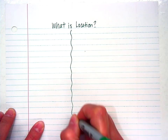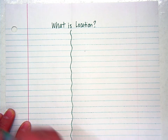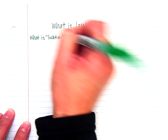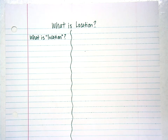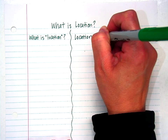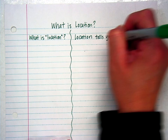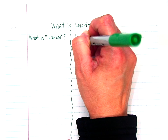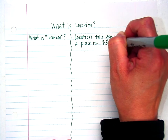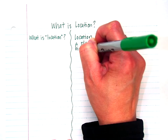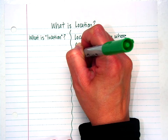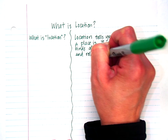Go ahead and draw a line right down where you folded. On the left-hand side of your paper, let's write the focus question: What is Location? Notice that I put location in quotes because when we look at location in geography, location has a very specific meaning. Location tells you where a place is — a simple definition, but it gets harder. There are two kinds of location: absolute and relative.